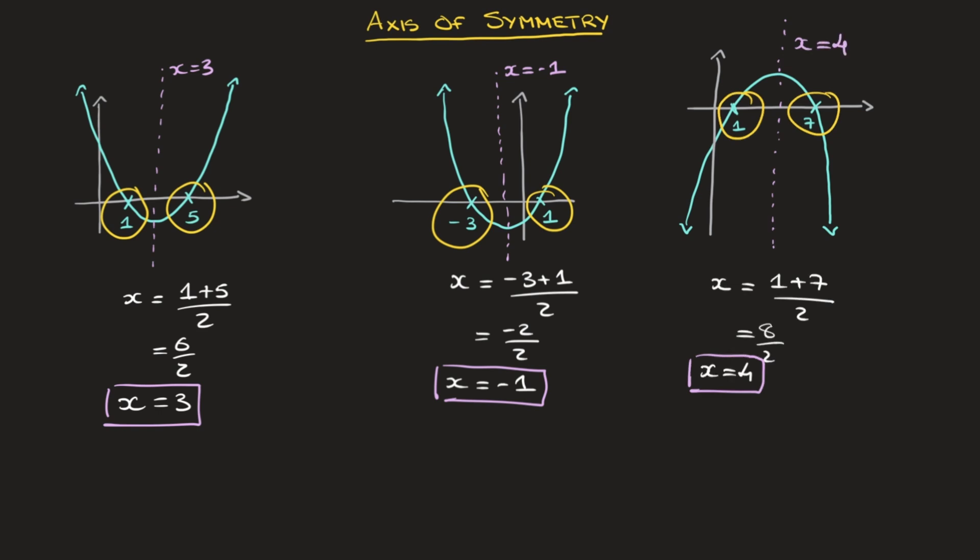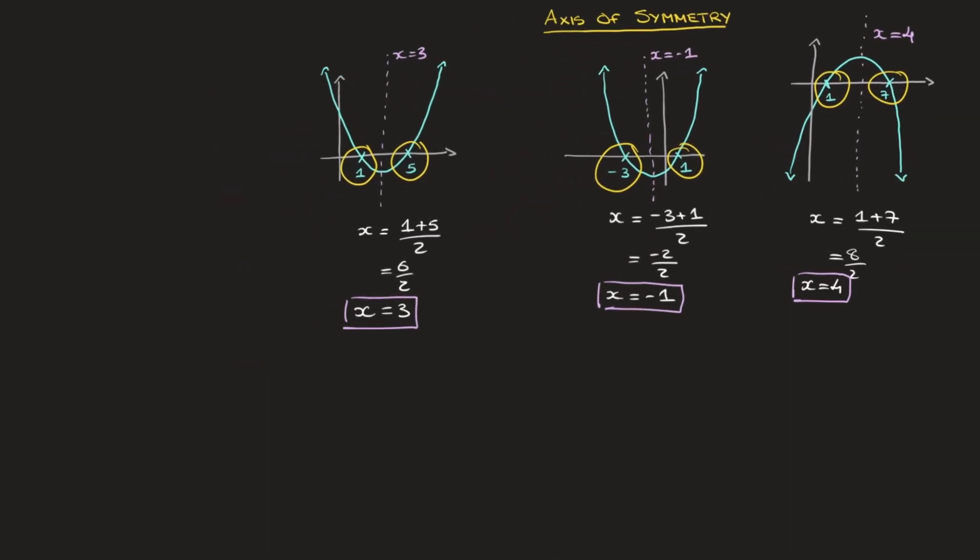The method we've just seen can be generalized with the following formula. We can state that given a parabola that crosses the x-axis at two values, say p and q, then its axis of symmetry